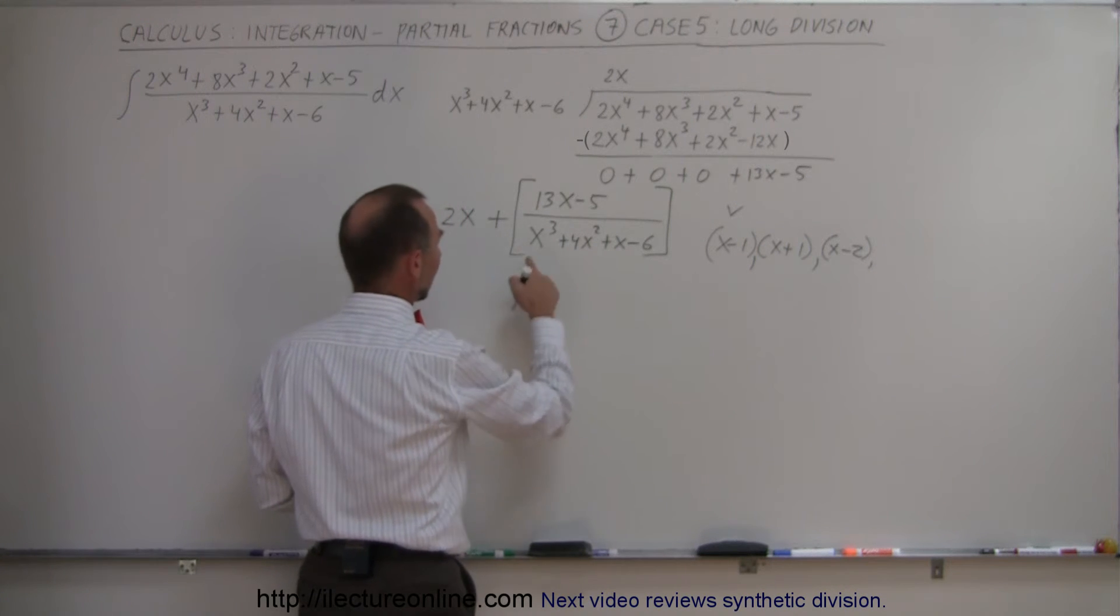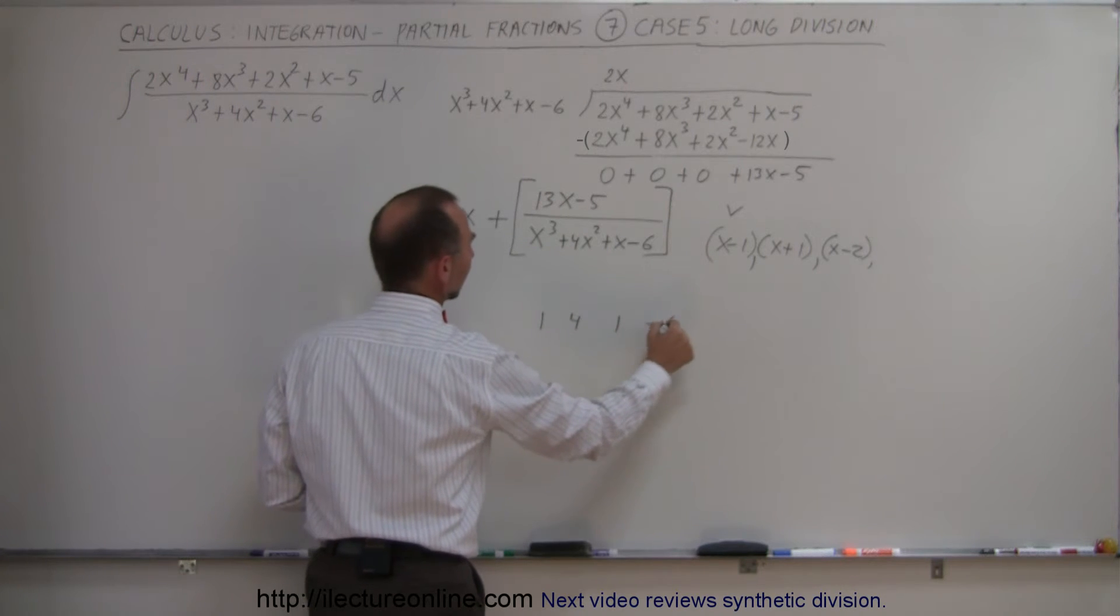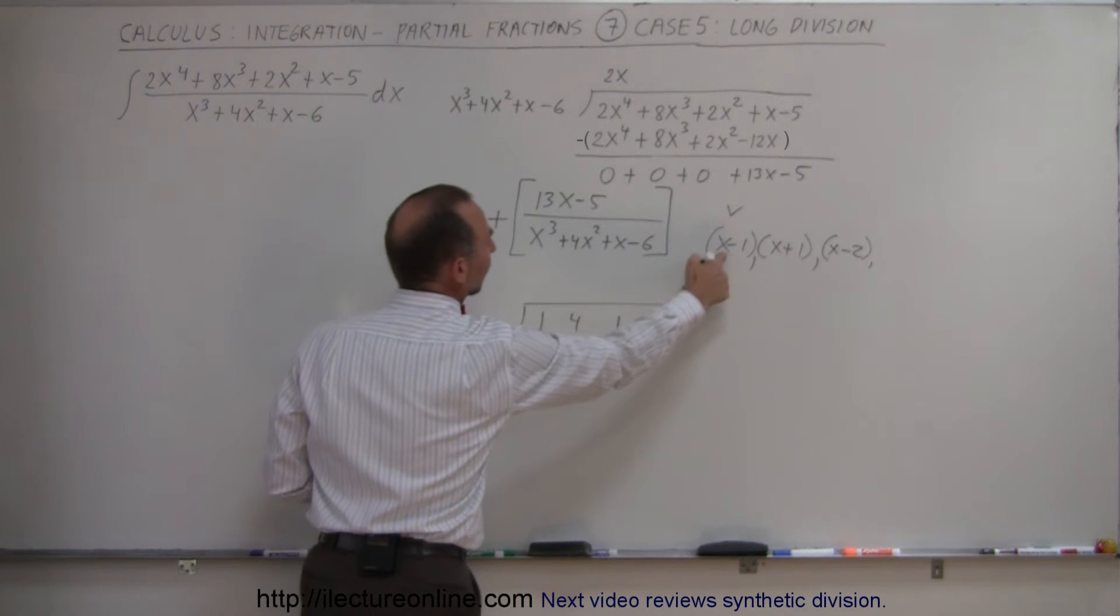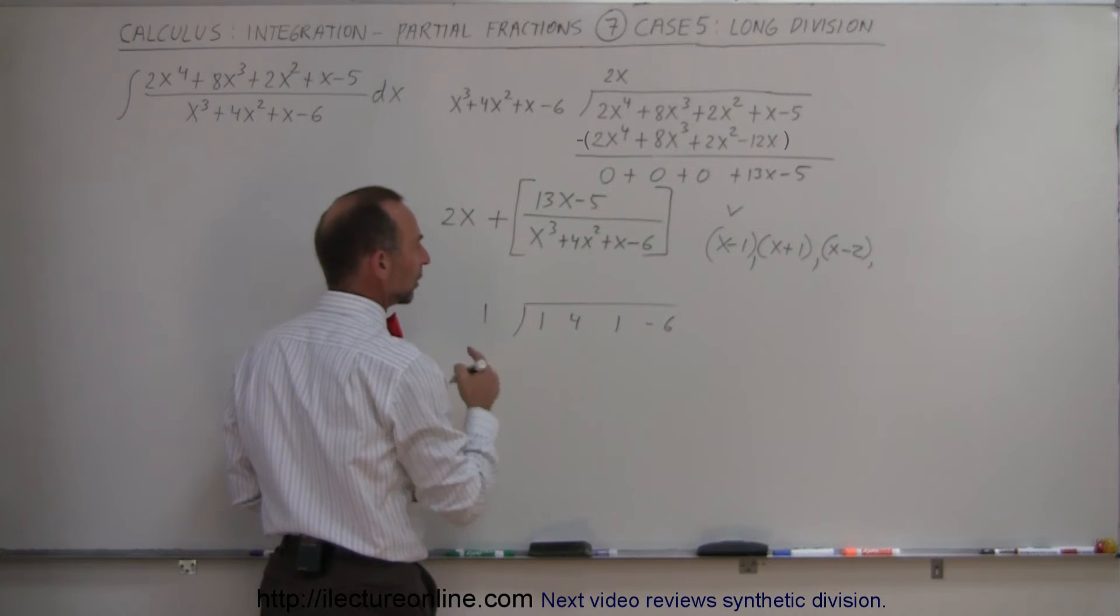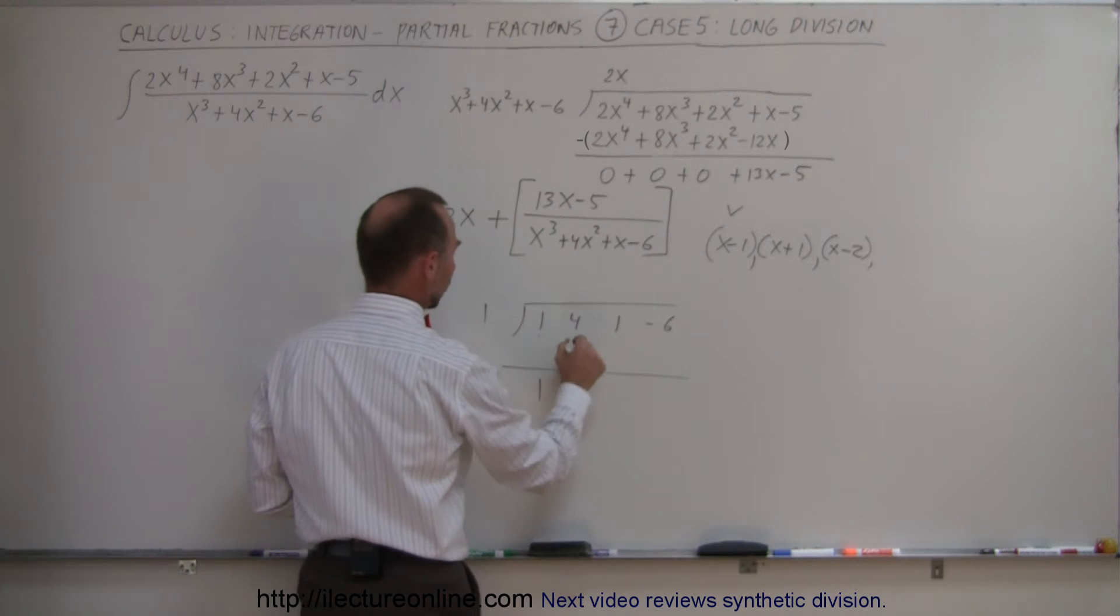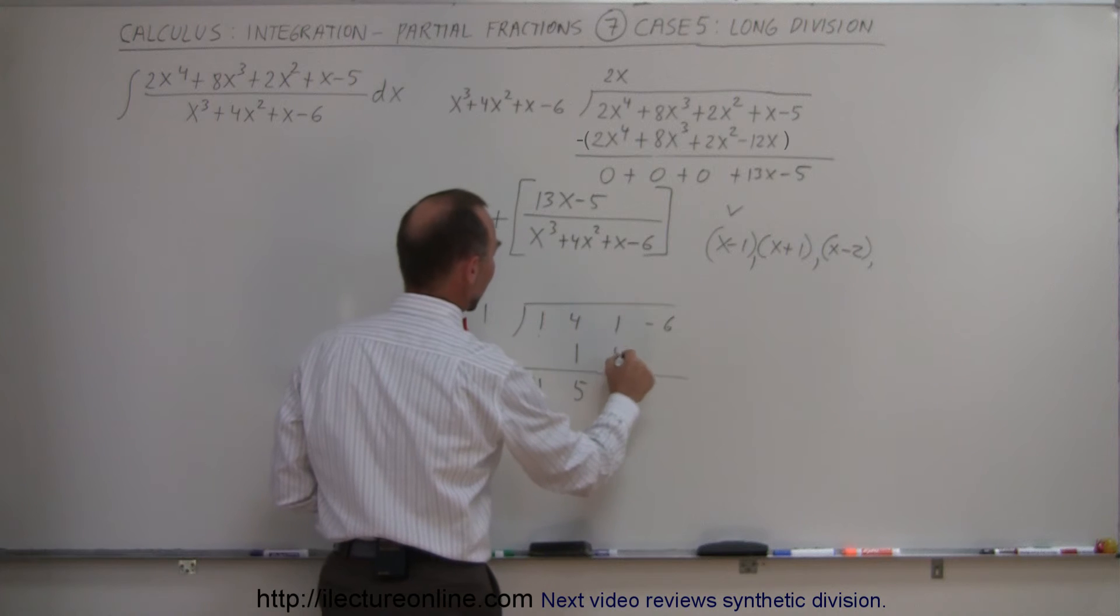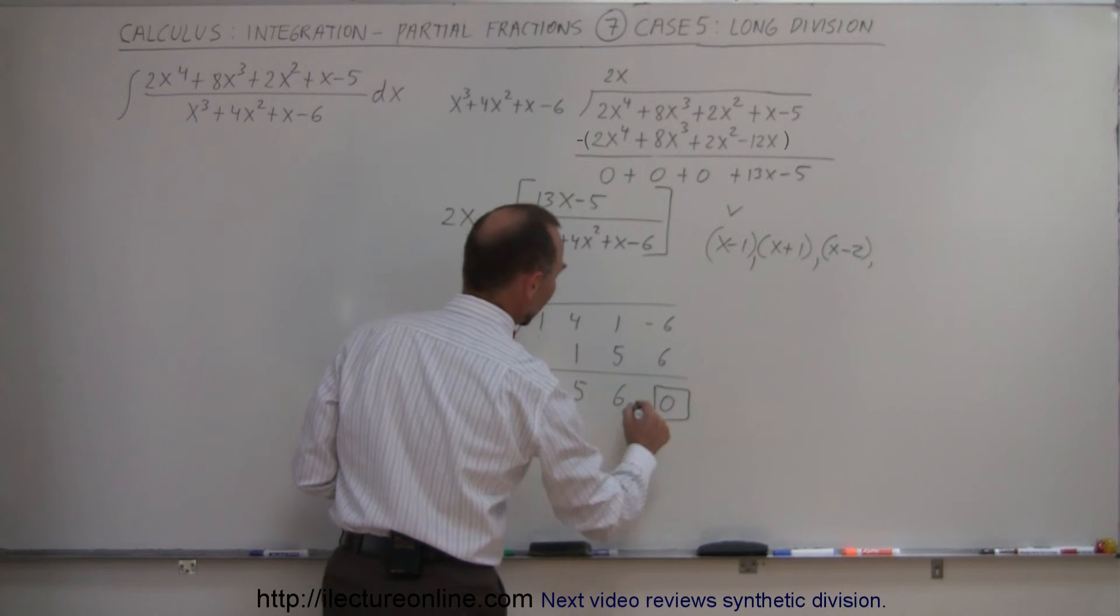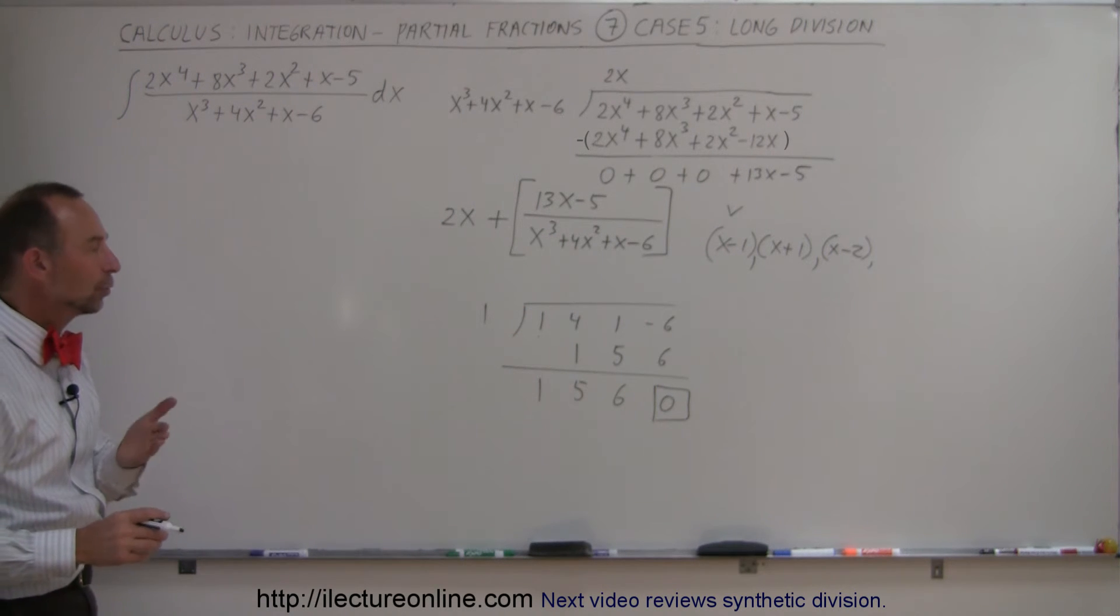So trying that, I write the coefficients down. So I have a 1, a 4, a 1, and a minus 6, and then go like this and put in the factor. So if x minus 1 is one of the factors, I will use the 1 for x, so 1 minus 1 is 0. And then we drop down the 1 over here. I go 1 times 1 is 1. I add them together, I get 5. 1 times 5 is 5. Add them together, I get 6. 1 times 6 is 6. Add them together, I get 0. Bingo! Right off the start, I found one of the factors. It's x equal to 1.